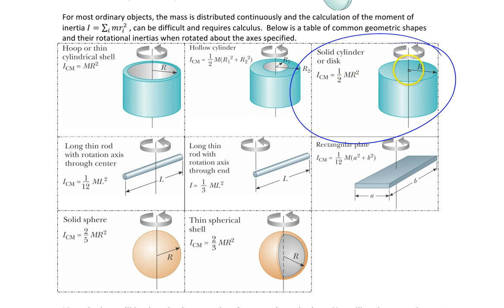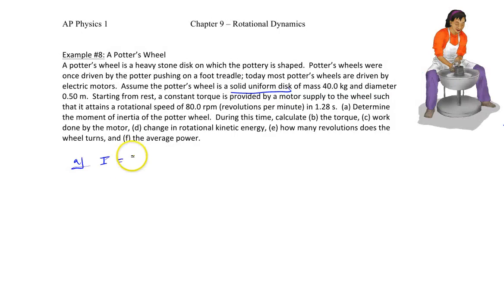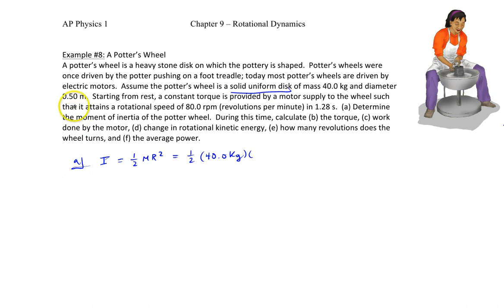That formula assumes rotation about the center of its axis. So I equals one-half mR squared, substituting our values: m is the mass of the wheel, which is 40 kilograms, and the diameter is 0.5 meters or 50 centimeters, so the radius is half of that — 0.25 meters. Squaring that and calculating gives us 1.25 kilogram·meters squared.